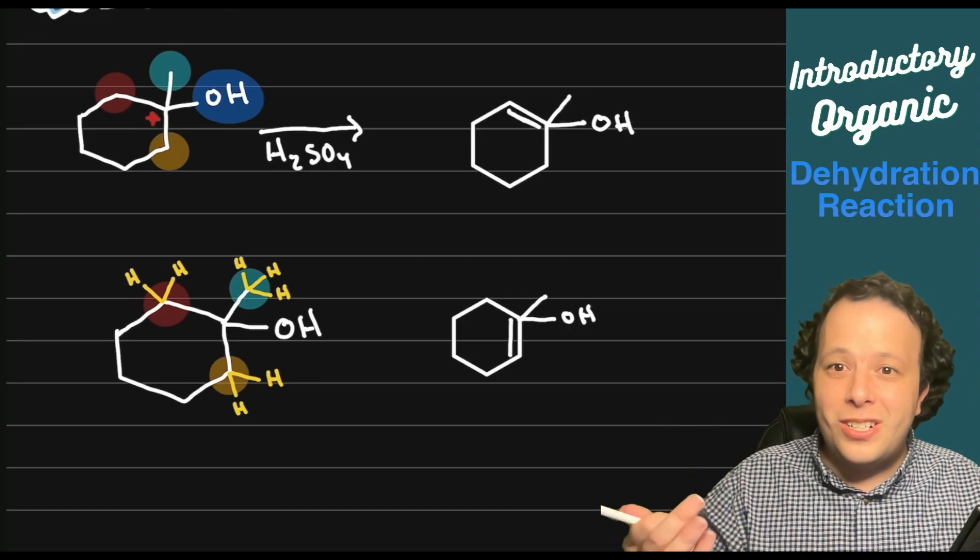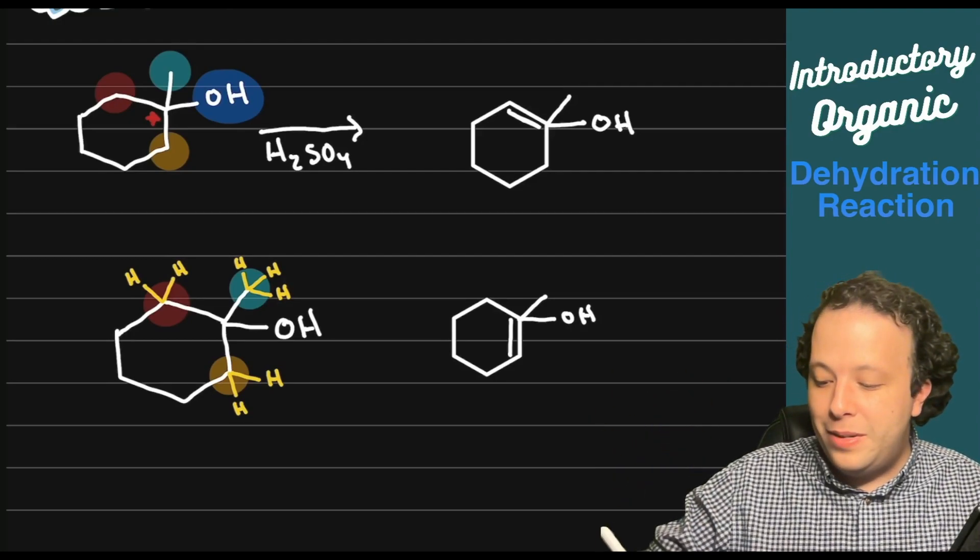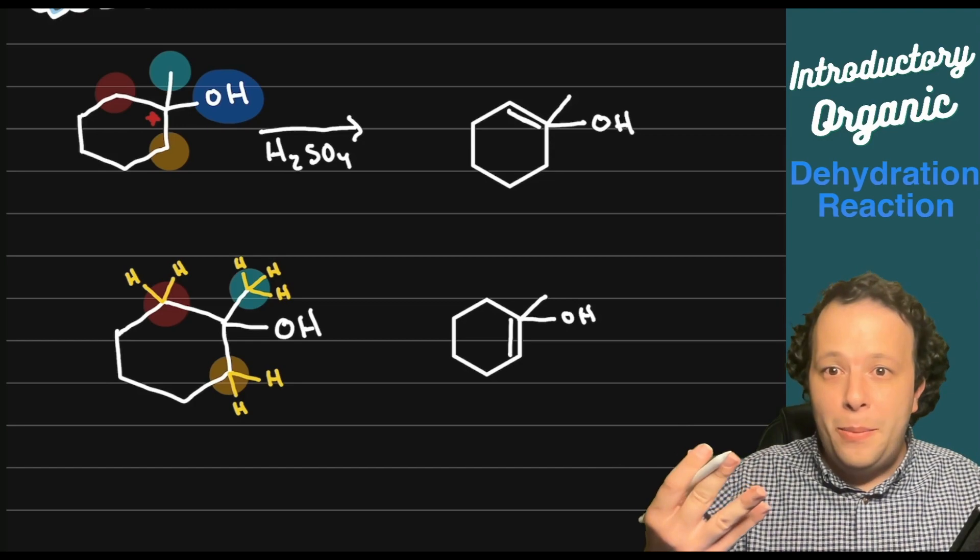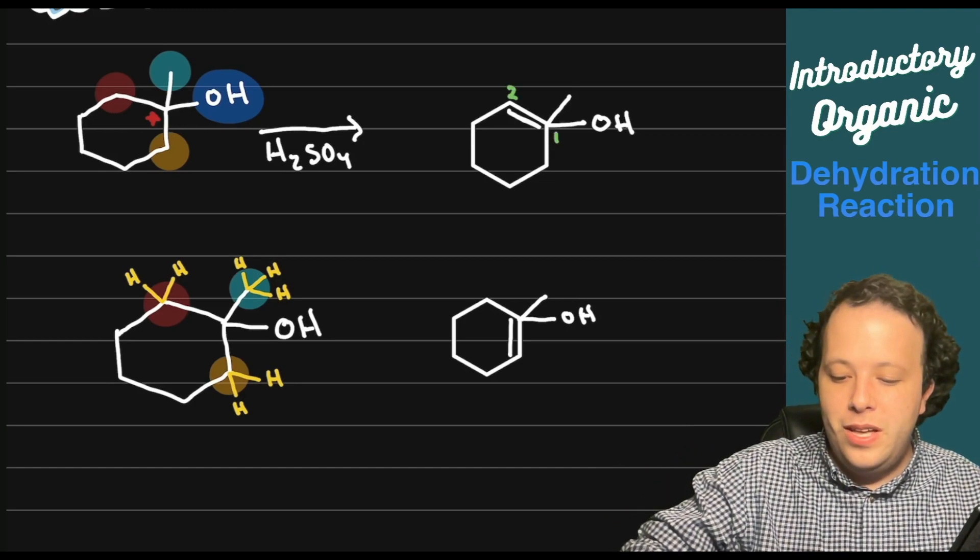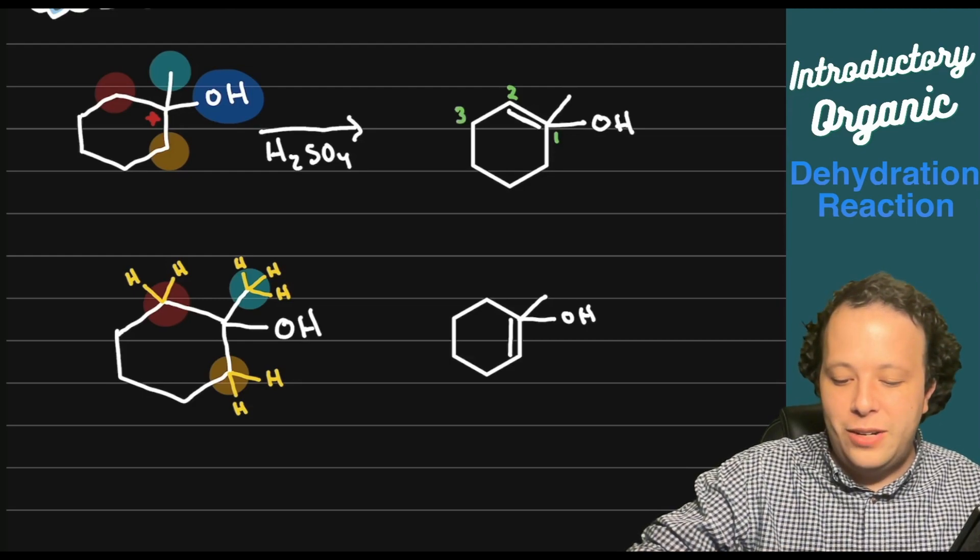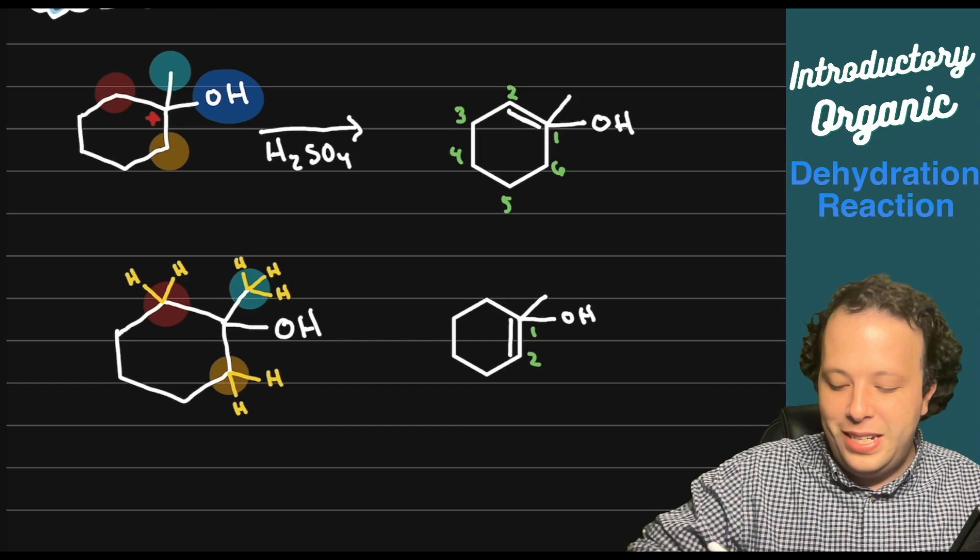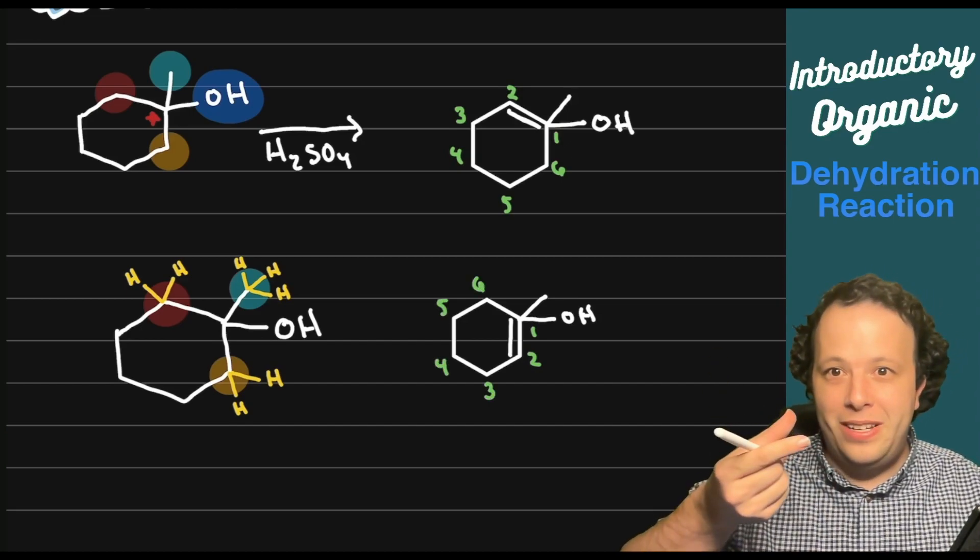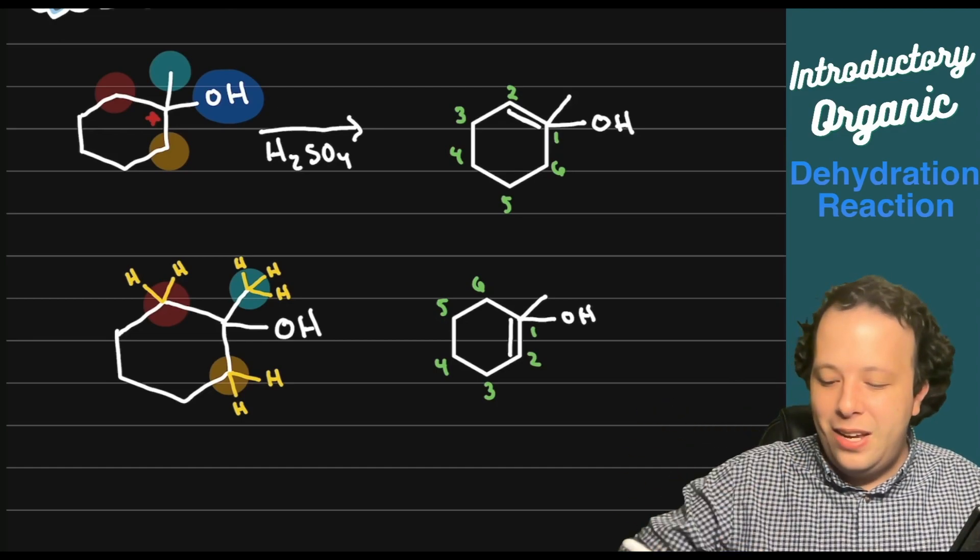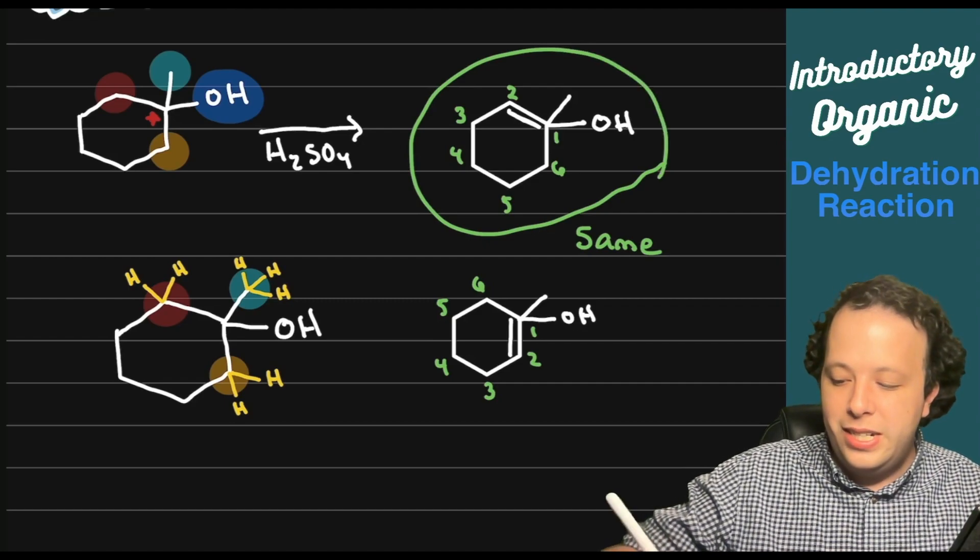Now judging from those two structures is there a difference between them or are they the same? When you are checking these number your priority. So we would start from one, two, and then go around that chain. Three, four, five, six. It's going to be the same exact cyclic structure on both. It's just flipped from the other one. So they are the same. So these, so either one is your major product here.